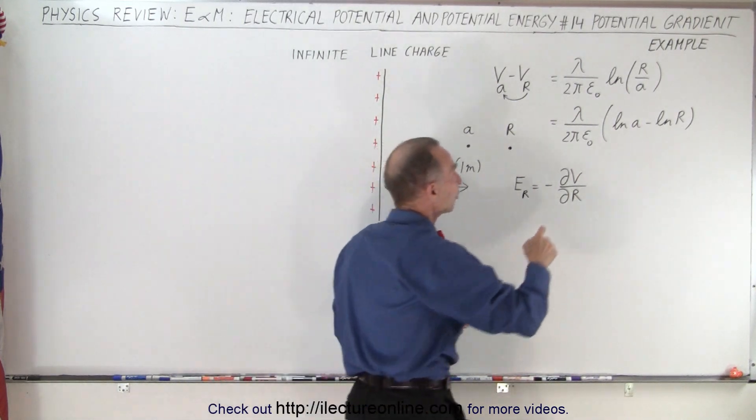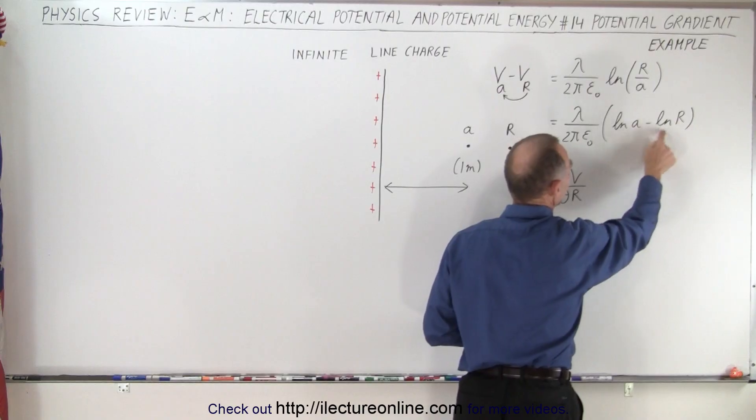But instead of writing it as the natural log of R over A, we're going to write it as the natural log of A minus the natural log of R.